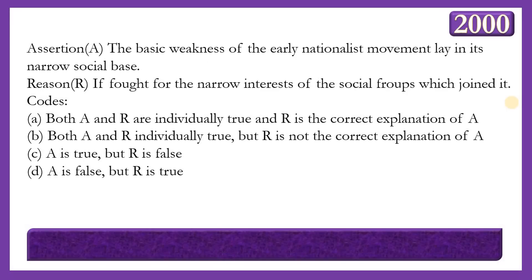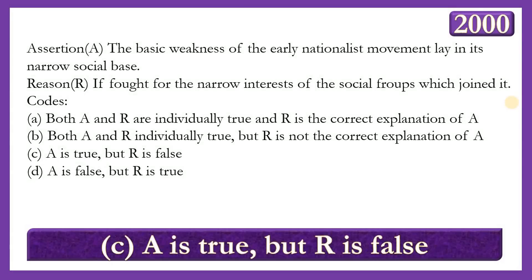Next is an assertion-reason question. Assertion: The basic weakness of the early nationalist movement lay in its narrow social base. Reason: It fought for the narrow interest of the social groups which joined it. The answer is option C — A is true but R is false — because early nationalists fought for the rights of common people, not just narrow social groups. Their organization was weak and they followed the method of prayer and petitions.